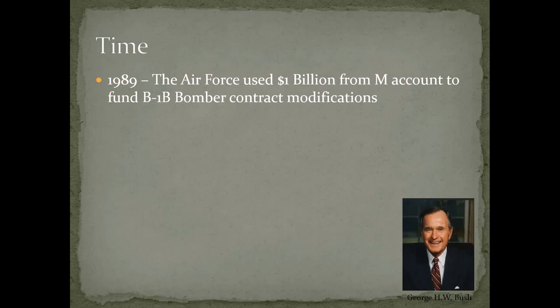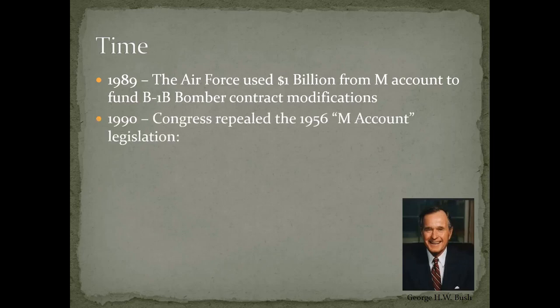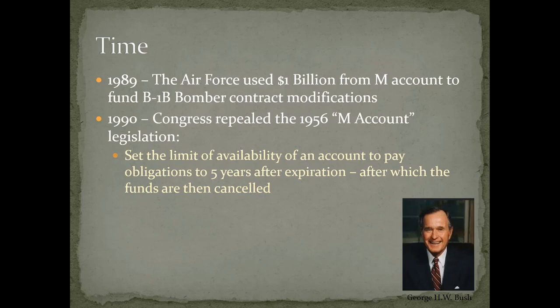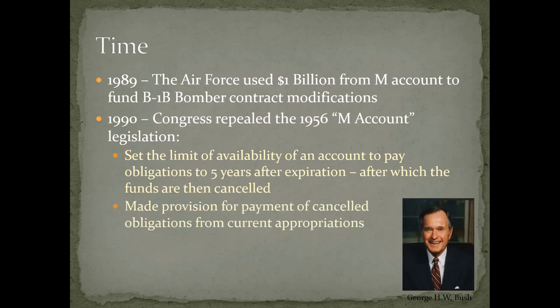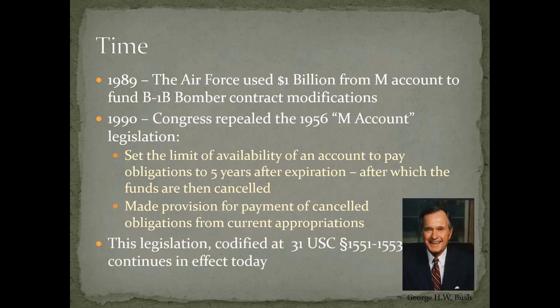Back to time: in 1989, the Air Force used a billion dollars from the M-account to fund B-1 bomber contract modifications. This got Congress's attention, and in 1990 they repealed the 1956 M-account legislation. They set the limit of availability of an account to pay obligations to five years after expiration, after which the funds are cancelled or returned to the surplus fund. It also made provision for the payment of cancelled obligations from current appropriations. This legislation is codified at 31 U.S.C. 1551-1553 and remains in effect today.